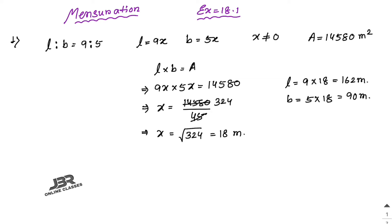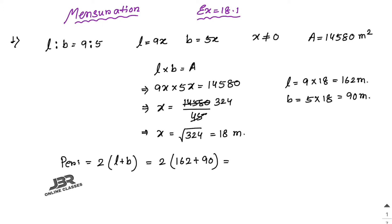Find the cost of surrounding the field with a fence at the rate of rupees 3.25 per meter. First you have to find the perimeter, because the length of the fence equals the perimeter of the rectangle. The formula for perimeter is 2 into (L + B), so 2 into (162 + 90) equals 2 into 252, which is 504 meters.